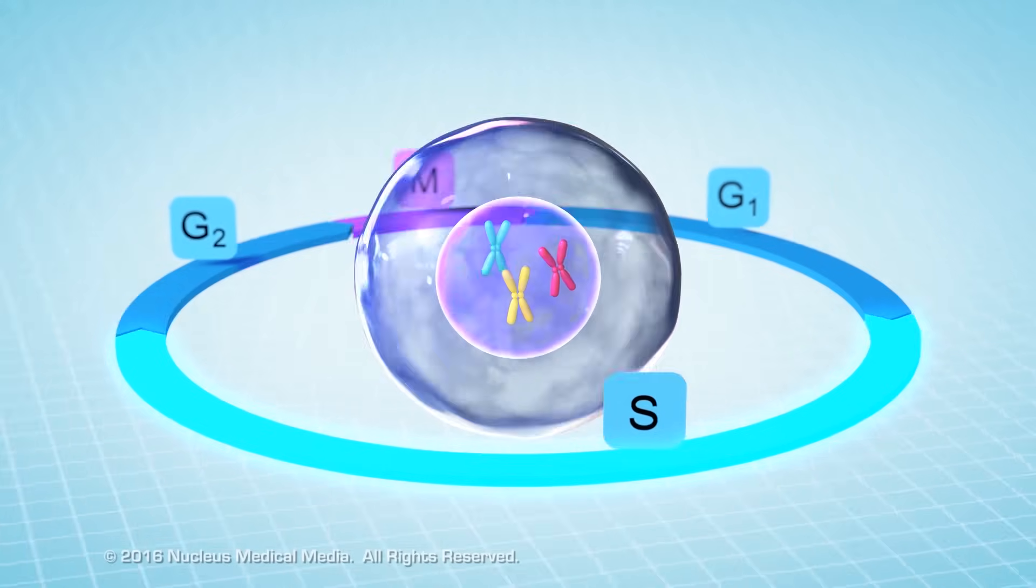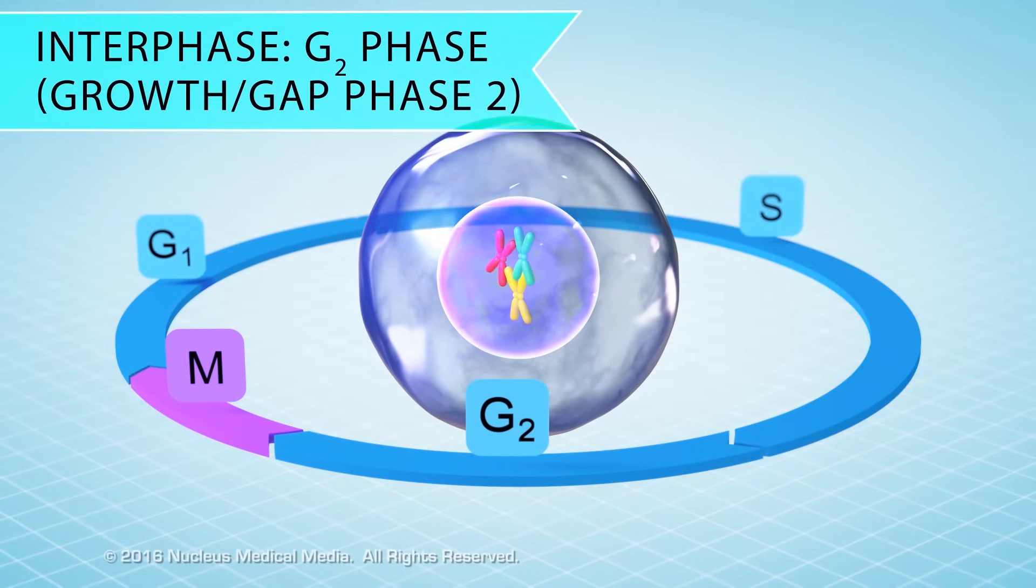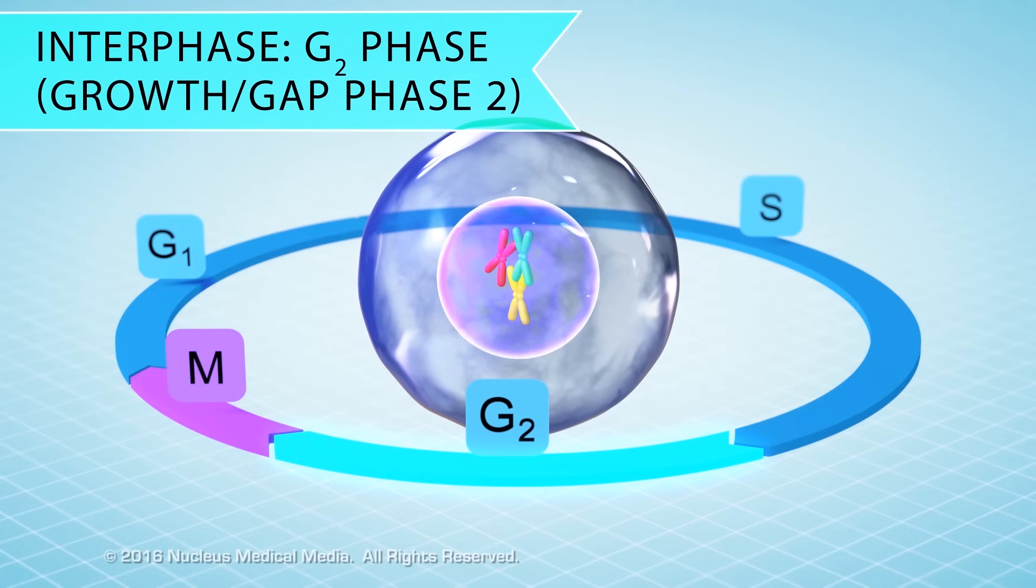Once DNA replication is complete, the cell enters the shortest and last part of interphase called G2, also known as growth two or gap phase two. Right now, it's enough to know that further preparations for cell division take place in the G2 phase.